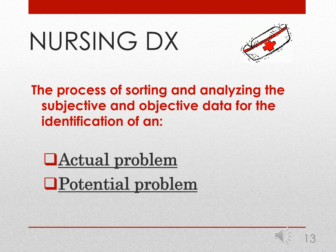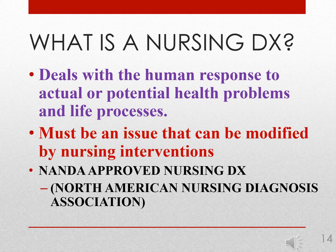The process of sorting and analyzing the subjective and objective data for the identification of an actual or potential problem is called creating a nursing diagnosis. When talking about the nursing diagnosis, it is dealing with the human response to actual or potential health problems and life processes. It needs to be an issue that can be modified by nursing interventions. When we talk about nursing diagnosis, we use the NANDA approved nursing diagnosis, which you'll see posted on Canvas and also in your textbook.